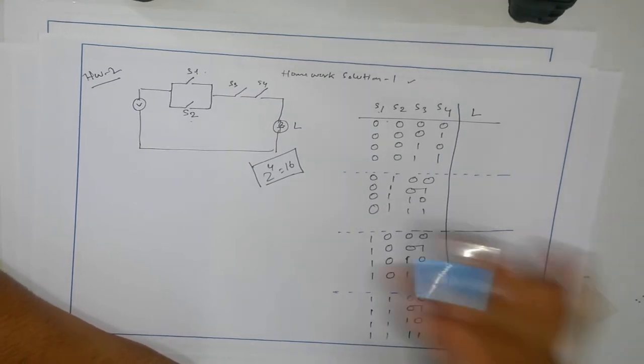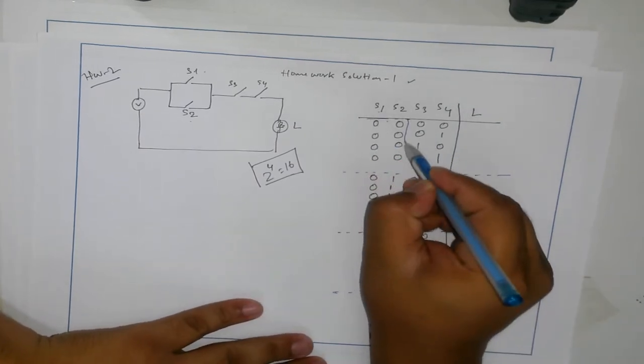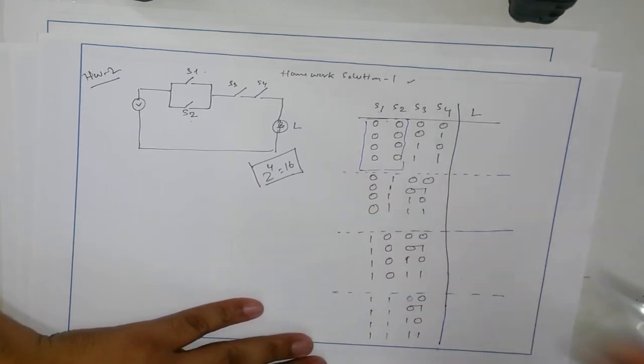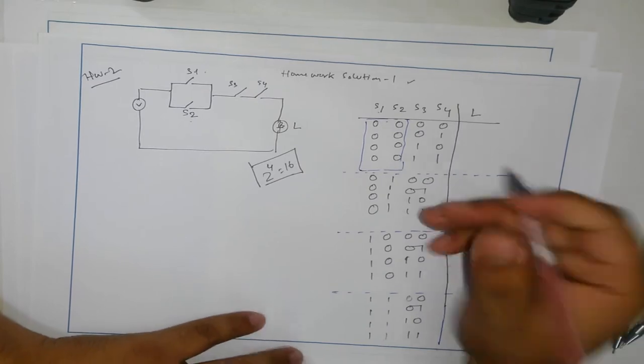So what would be L? First, we have to determine that if S1 and S2, any one of those is true or not. So in this case, both of those are false.